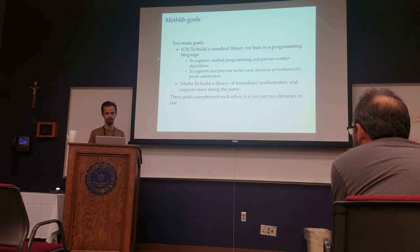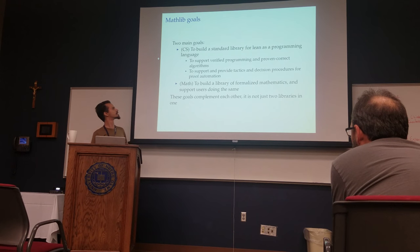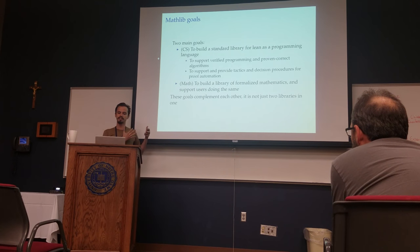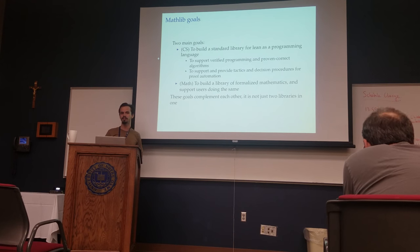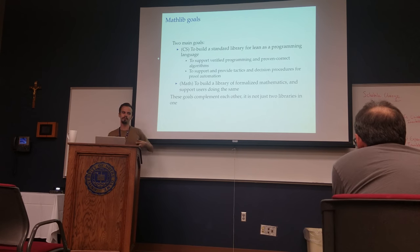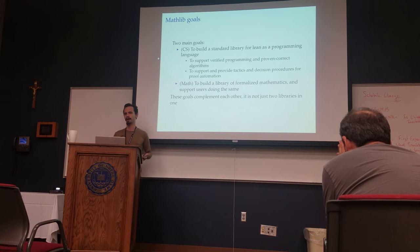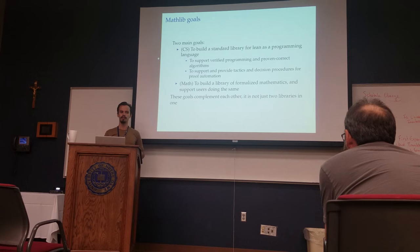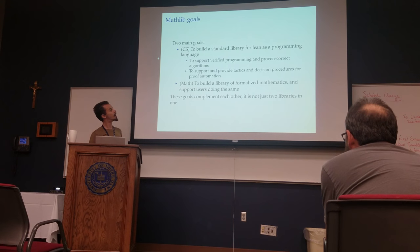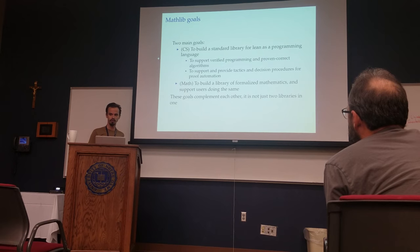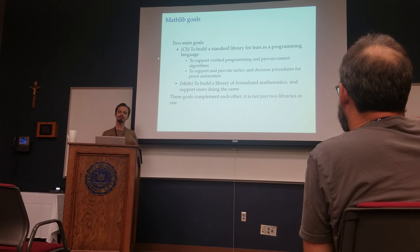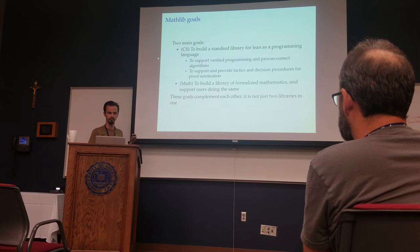MathLib has two main goals — the computer science goal and the math goal. The computer science goal is to build a standard library for Lean as a programming language, something like what you would expect from standard C header files or the standard library of Python — basic data types and all the operations you expect on them. Lean has the ability to do proofs and programs in the same language, which positions it very well as a tool for verified programming.